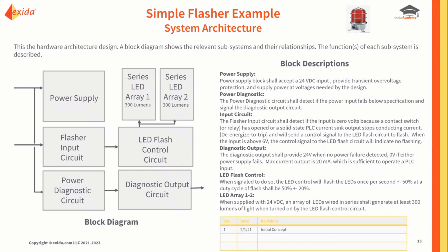We need an architecture. The architecture for this particular design has seven function blocks. For each architecture block, we have to understand its purpose. There are some good block descriptions on the right-hand side of the screen. If you're going to do this FMEDA, you need to understand what each function block does.